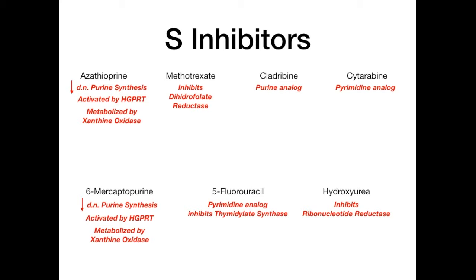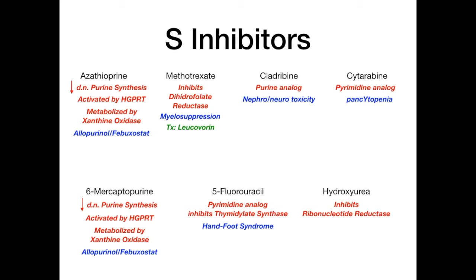As a theme throughout the anti-cancer drug series, exam questions are most likely to ask about adverse drug reactions. For azathioprine and 6-mercaptopurine: both are metabolized by xanthine oxidase, so if you give allopurinol or febuxostat — which inhibit xanthine oxidase — then these drugs won't be broken down, leading to massive toxicity. On exams, a cancer patient given allopurinol with major toxicity should trigger this connection.